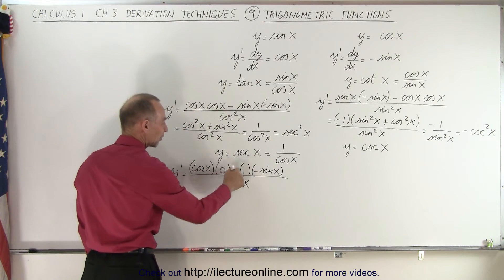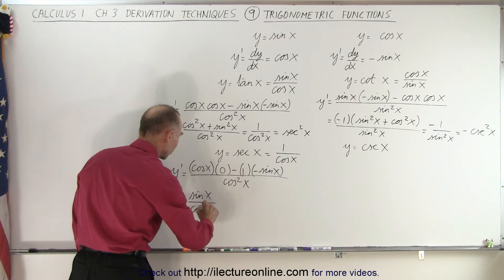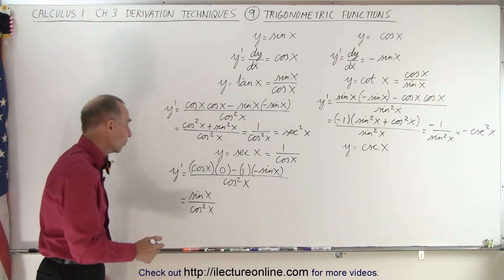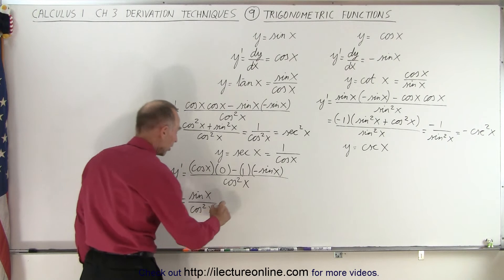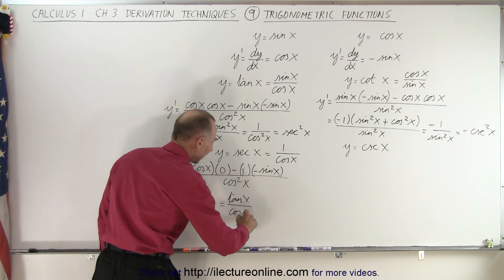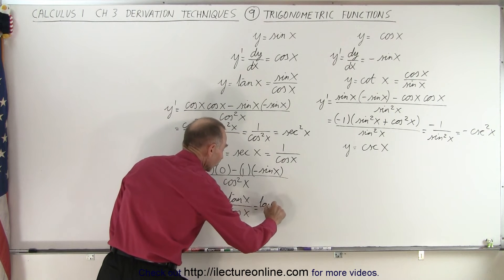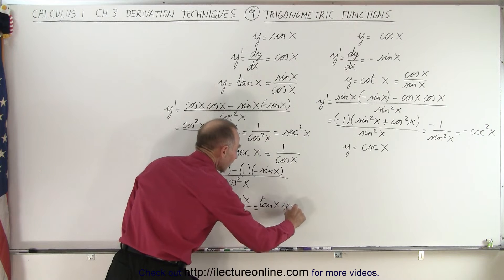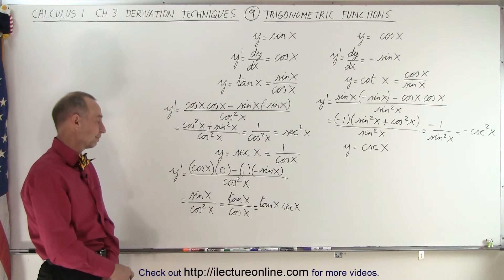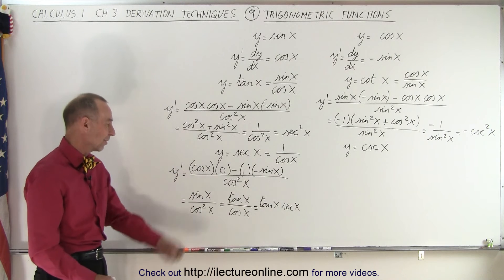This is zero, and minus times the minus becomes plus, so this becomes the sine of x divided by the cosine squared of x. You can write this in other ways — the sine divided by the cosine is a tangent, so you could write this as the tangent of x divided by the cosine of x. One over the cosine can be written as the secant, so you could write this as the tangent of x times the secant of x. There are many different ways to write the final answer; they're all correct.